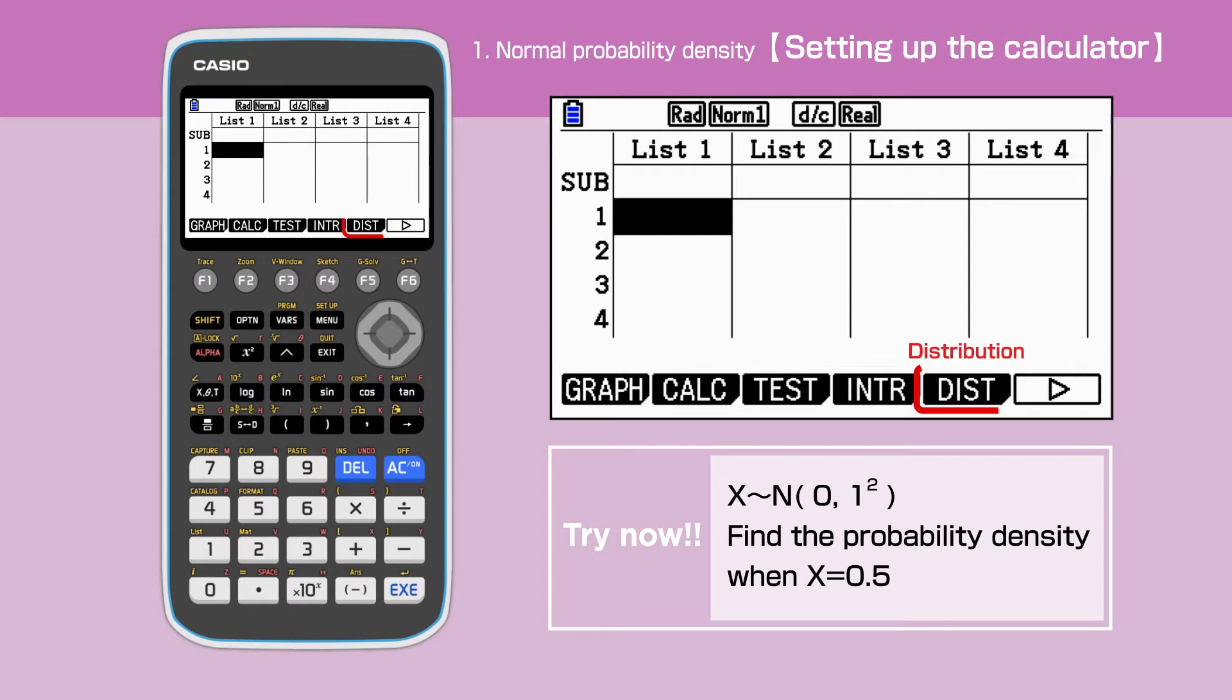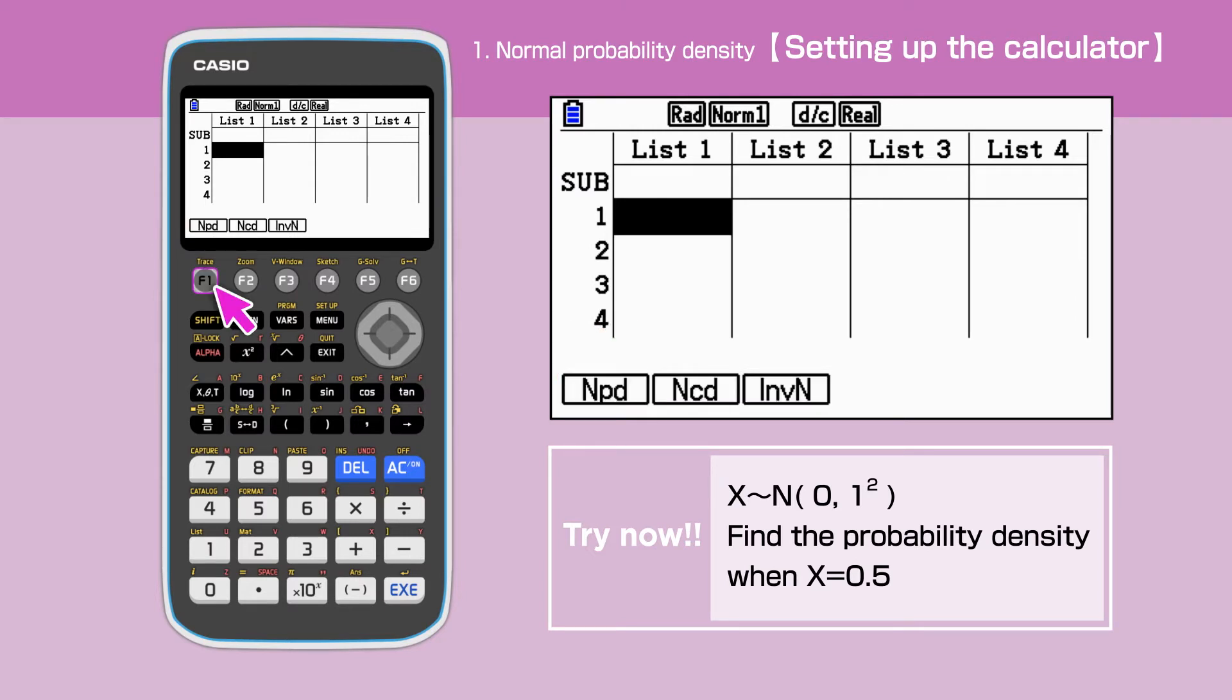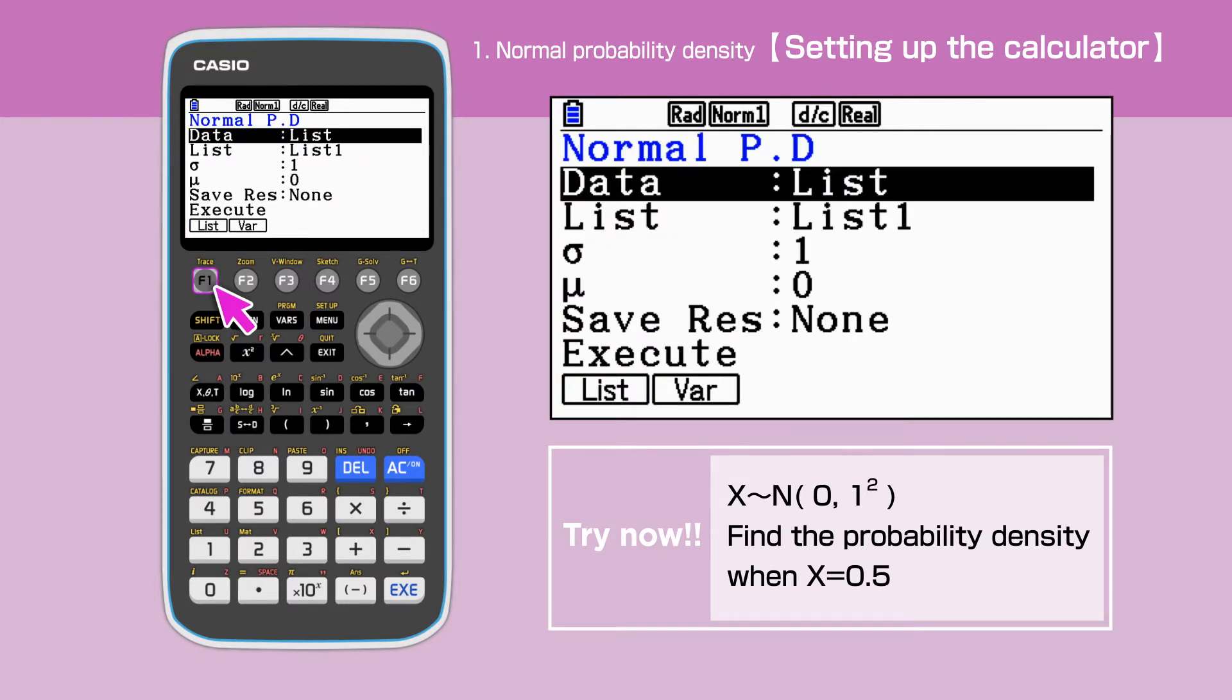Press F5 to select distribution. Press F1 to select the normal distribution. Press F1 to select normal probability density as we are to work out the probability density when x equals 0.5.